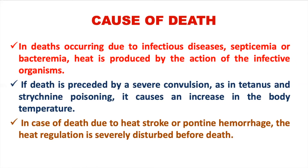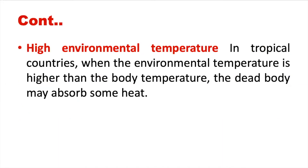In cases of death due to heat stroke or pontine hemorrhage, the heat regulation mechanism is severely disturbed before death. In these cases, due to pontine hemorrhage or heat stroke, heat regulation is disturbed and body temperature increases.